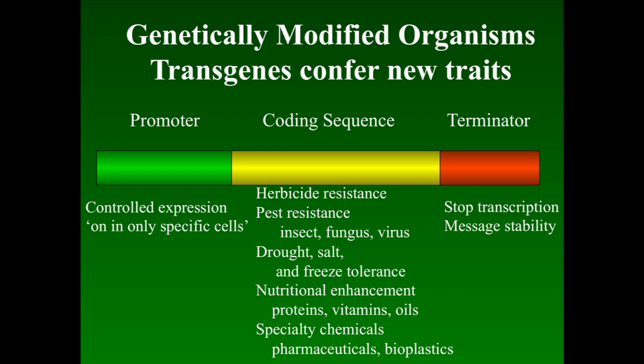Nutritional enhancement: we can increase the nutrition of crops by adding genes from other organisms — vitamins, oils. We can even make specialty chemicals, pharmaceuticals in plants. Antibodies used for drugs can be made in plants. Vaccines can be made in plants. Bioplastics — organic plastics — can also be made in plants.